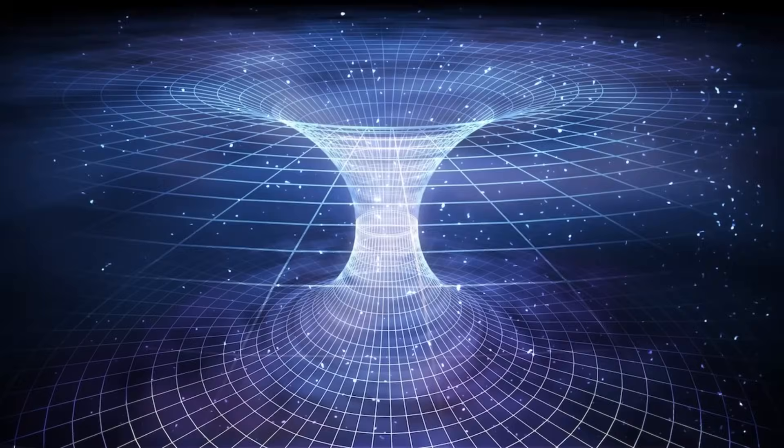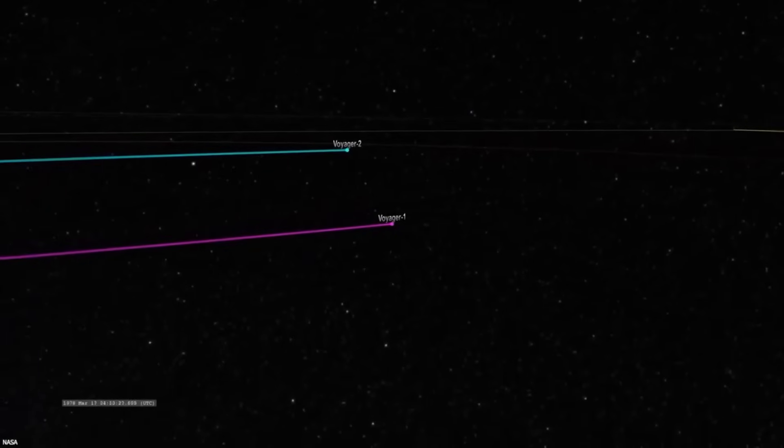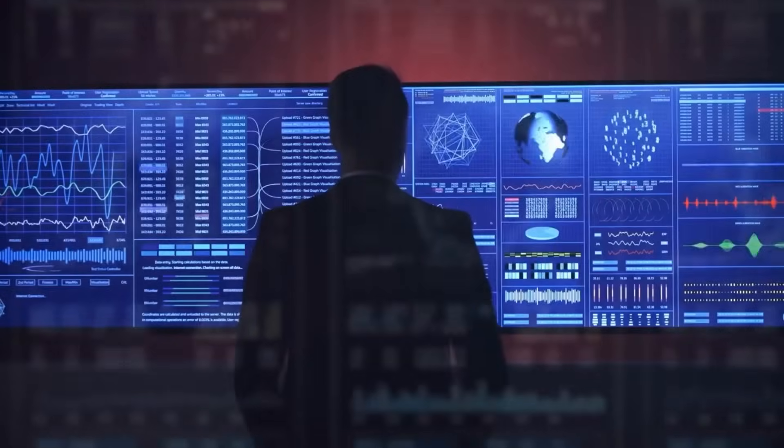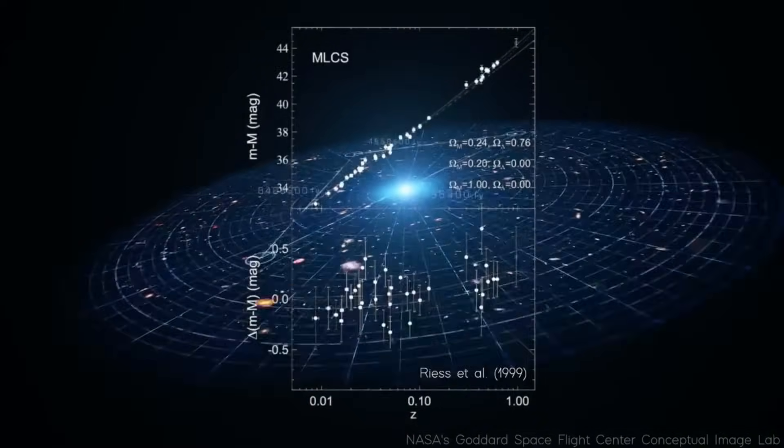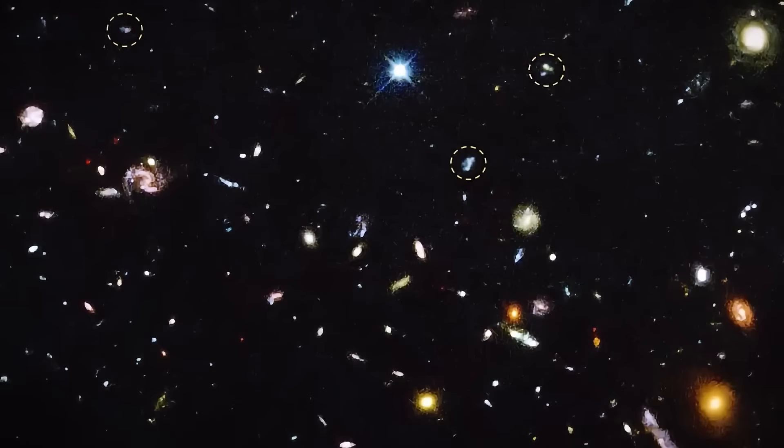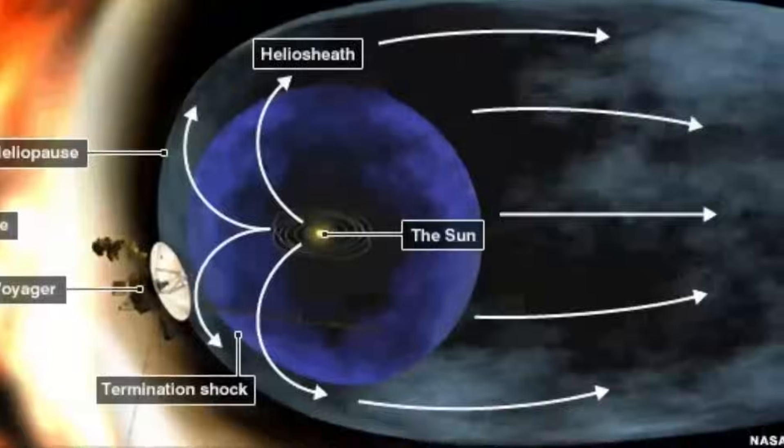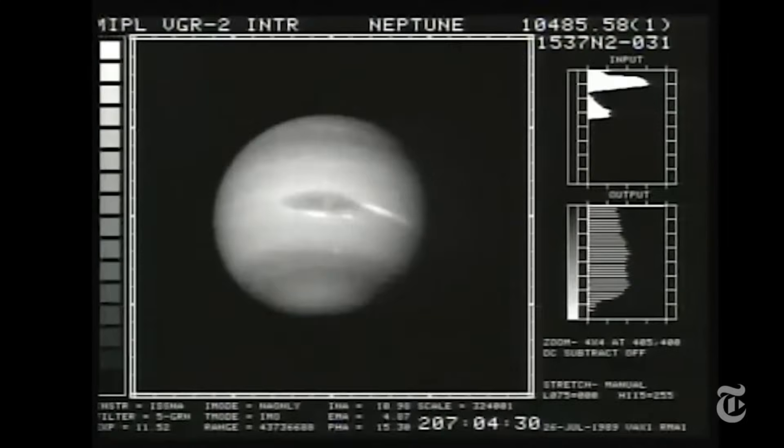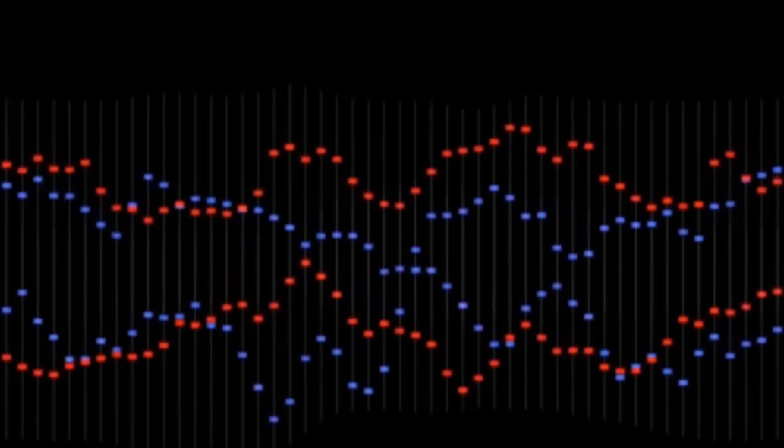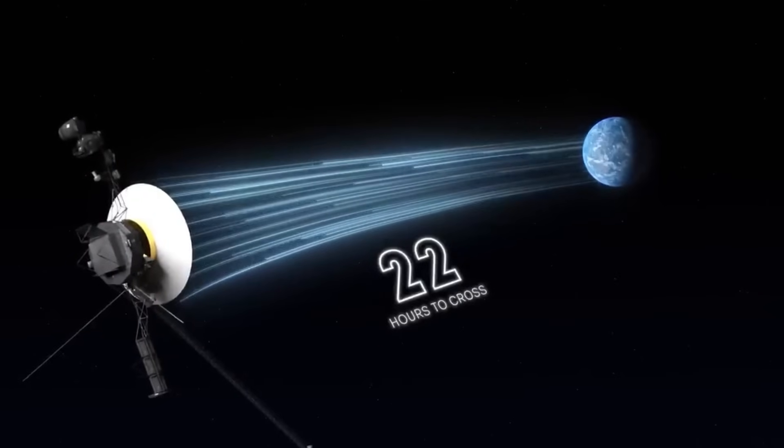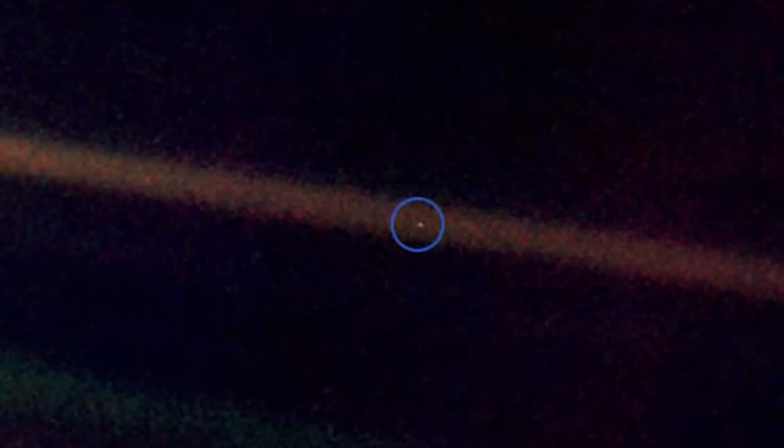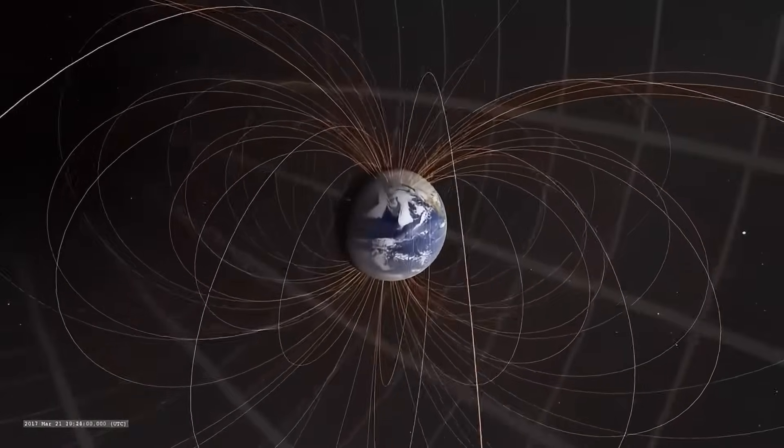Such a ripple could be the signature of a new physical process, perhaps a boundary where the known laws of physics begin to give way to unknown forces. It challenges our current understanding of the interstellar medium and the forces that govern it. More tantalizingly, it raises the possibility that there exists a structured blueprint in the cosmos, a pattern encoded in the very essence of spacetime that could alter our understanding of the universe. Whether this resonance is a natural byproduct of cosmic processes or a hint of something intentionally engineered remains an open question, one that promises to drive astrophysical research for years to come.